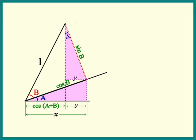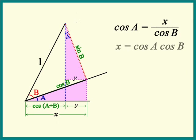Let's find x first. Using the triangle on the bottom, we see that x is the adjacent side of angle a. That means we can try to use cosine of a to find x. Cosine of a is its adjacent side x over the hypotenuse cosine b, so x equals cosine of a times cosine of b.